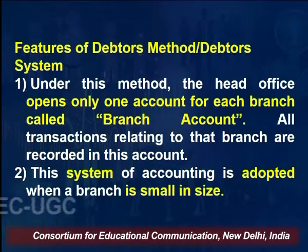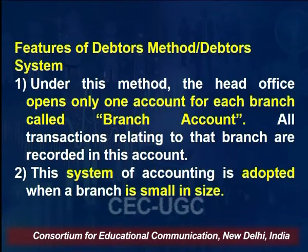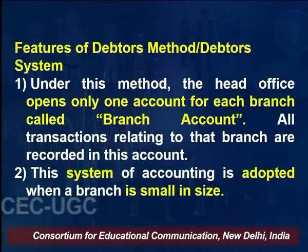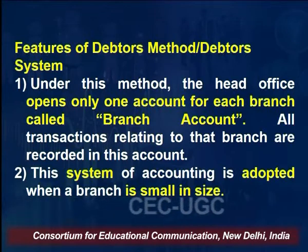In today's lecture we will discuss the first method — the Debtors Method or Debtors System. Under this method, the head office opens only one account for each branch called the Branch Account. This account is opened in the books of the head office only, and all transactions related to the branch are recorded in this account. This system is adopted when the branch is small in size and transactions are very few.